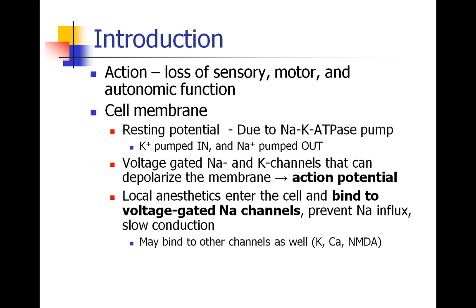Local anesthetics will enter the cell and bind to the voltage-gated sodium channels on the inside of the cell. When they do that, they prevent the influx of sodium and slow conduction across the nerve cell. There may be secondary mechanisms whereby local anesthetics bind to other ion channels as well, but the primary action is binding to sodium channels on the inside of the cell.